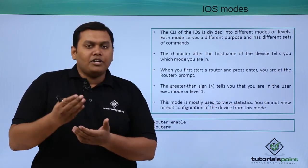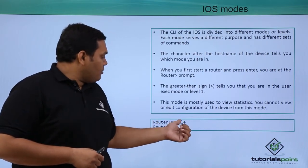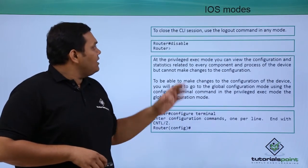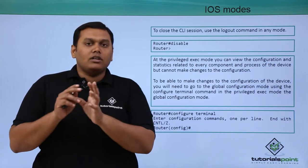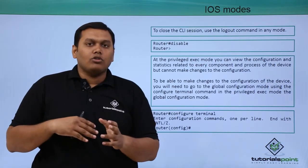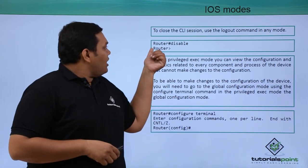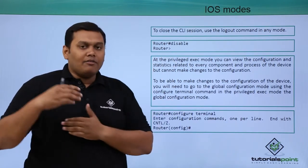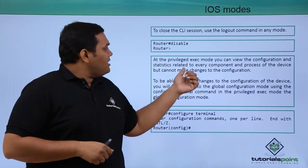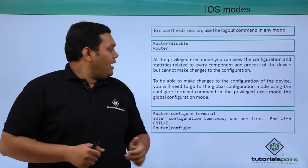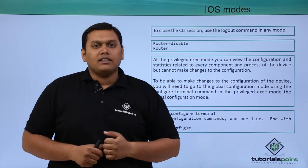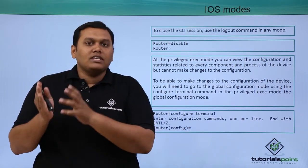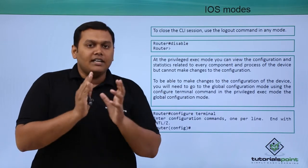When you type 'enable,' the greater-than sign automatically changes to the hash sign, entering privileged mode. To close the session, use the 'logout' command. If you enter 'disable' in that mode, it will come back to the normal level one user executable mode. At the privileged executable mode, you can view the configuration and statistics related to every component on the device.